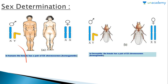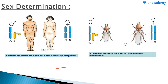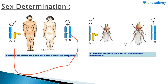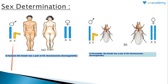The female ova contains only X chromosomes; the male contains X and Y chromosomes which segregate into gametes. When the Y-bearing sperm fuses with the female gamete (X), XY is formed and a male develops. When the X-bearing sperm fuses with the female ovum, XX is formed and a female develops. Thus, the male is responsible for sex determination, and there are 50-50 chances of being male or female.